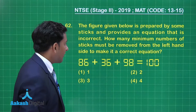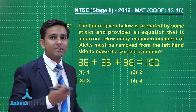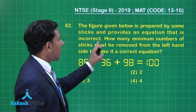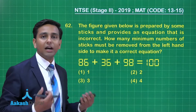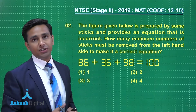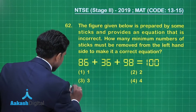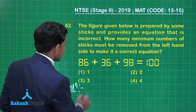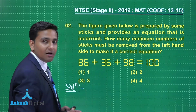In this equation, the numbers are formed by some number of sticks. The question asks how many minimum sticks must be removed from the left-hand side so that we obtain a balanced equation. Looking at the given equation carefully, the numbers are 36, 86, and 98. Definitely the sum is greater than 100.